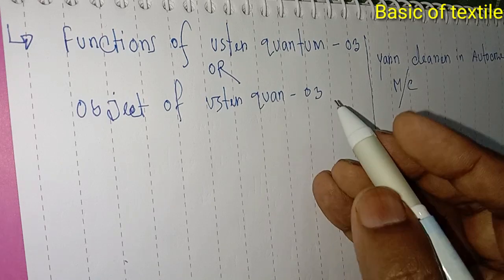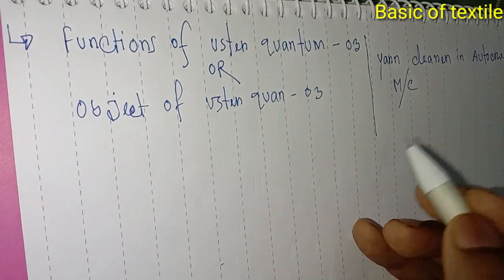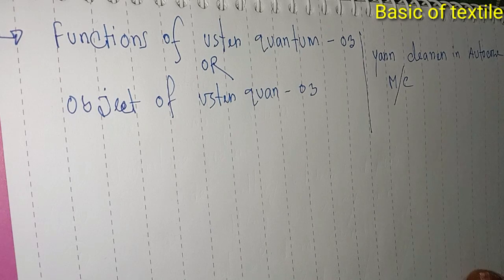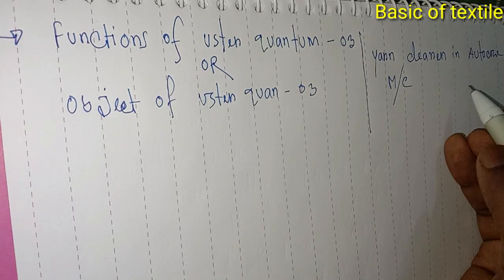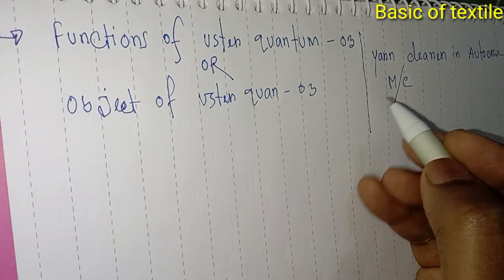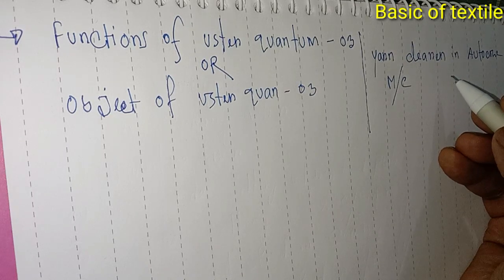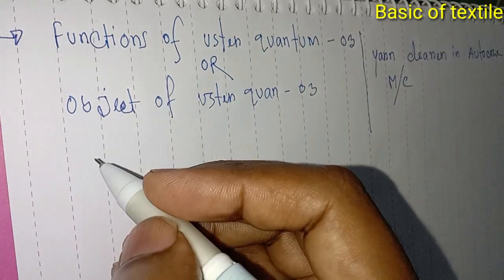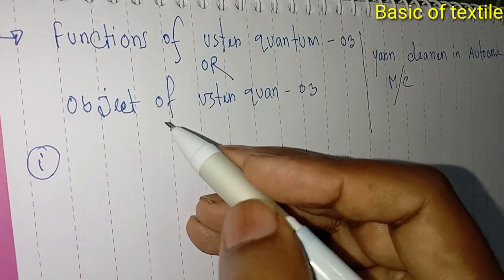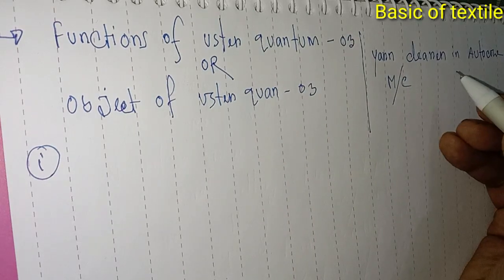Someone asked a question in an interview about the yarn clearer — what is it? The answer is that the Uster Quantum 3 was also used before as Quantum 2, and data is used for suitable purposes. The yarn clearer data cuts — that is the key function. So, the object of Uster Quantum 3 and functions of Uster Quantum 3 relate to the yarn clearer.